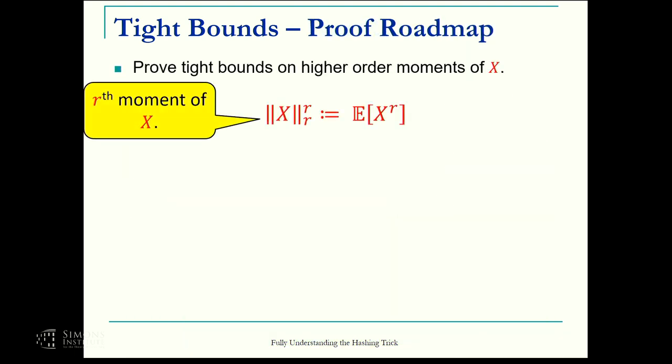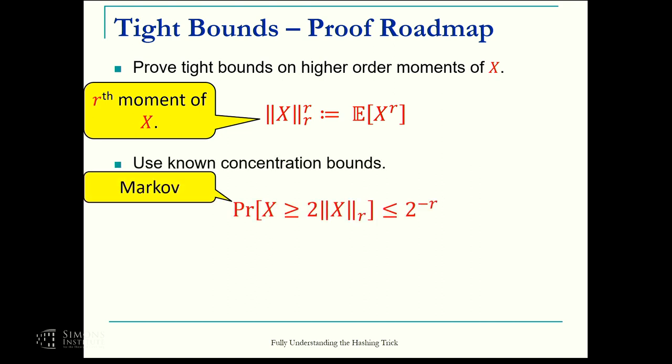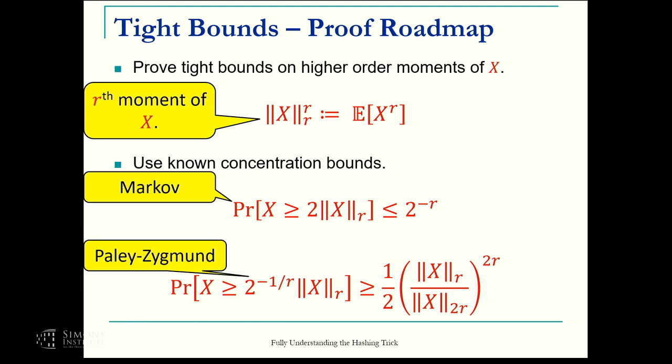How do we prove it? First of all, we take this variable X, which is the difference between the original norm and the new norm. We prove tight bounds on higher order moments of X. Then we use known concentration bounds. The concentration bounds that we use are simple. The application is not so simple. This is Markov. This is Paley-Zygmund. These are first and second order concentration bounds.